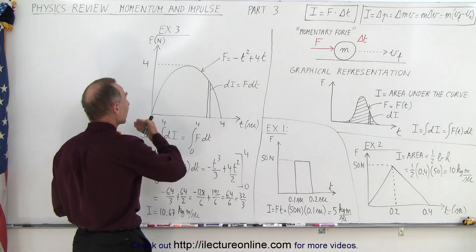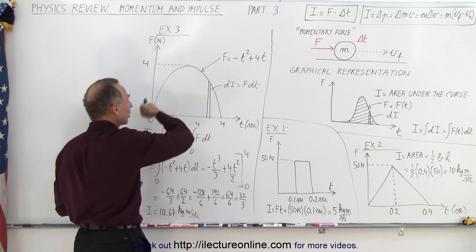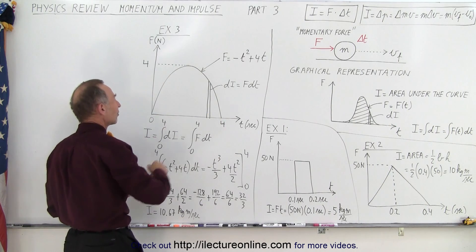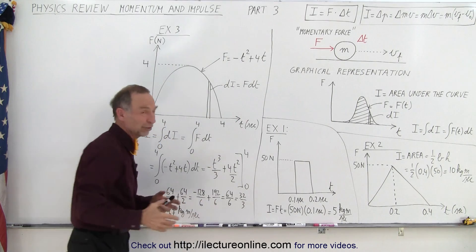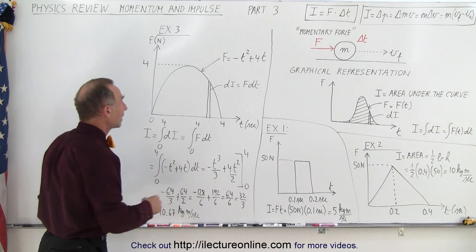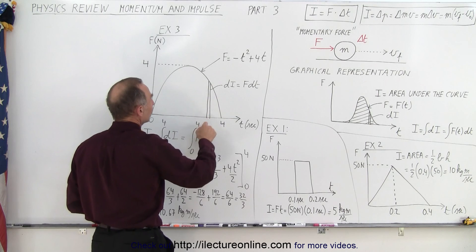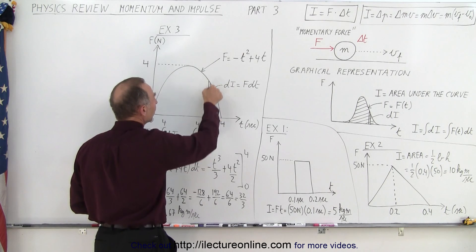Now what if we have something that is more like this? And so here we have the equation that's defined. The force is defined as minus t squared plus 4t, which is a quadratic equation. And so we can take a small little snip of that, and so we can say that there's a small amount of impulse.